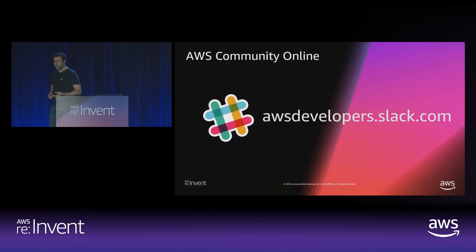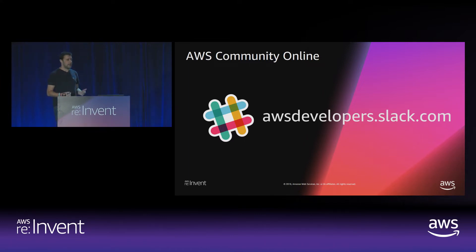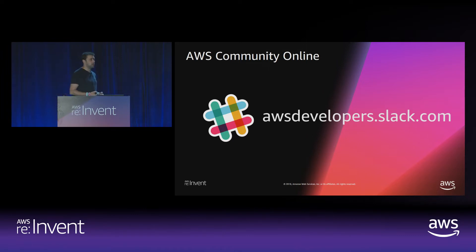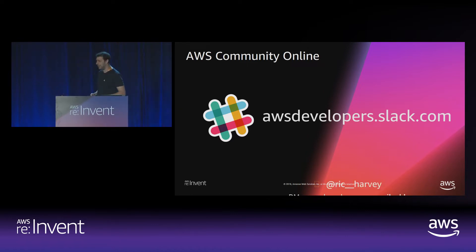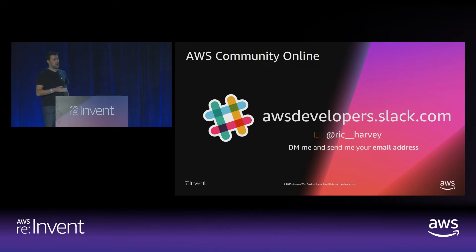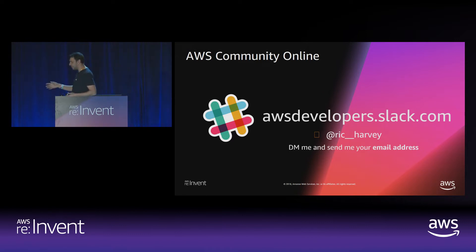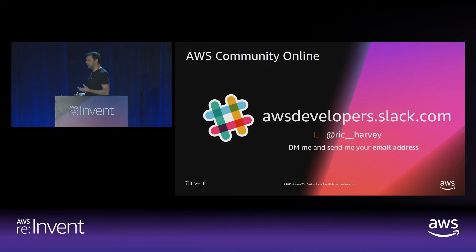We've also got an online community. We have a Slack channel now, and we're building up a community channel in there — just shy of 700 users at the moment. It's a chance to mix with other AWS users, share your knowledge, ask questions, share your experiences. At the moment, there's only one way to get an invite: if you DM me on Twitter, my DMs are open to anyone — send me your email address and I will add you. This is because it's in preview, but you're lucky — you're talking to me and I can open this up to all of you. Community is one of these things where you get more out the more you put in.